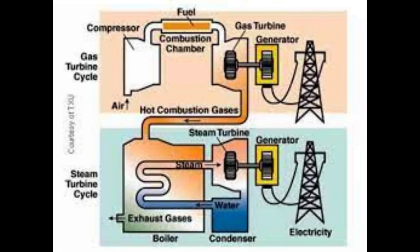Combined cycle gas turbine: The exhaust waste is used in heat recovery steam generators. Mainly two turbines are used — one is a gas turbine whose exhaust is utilized by the heat recovery steam generator to generate steam and run the steam turbine.